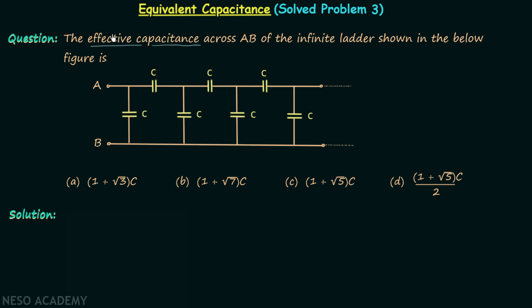Effective capacitance is the equivalent capacitance and we are required to calculate it across AB. So we need to calculate the equivalent capacitance across terminal A and terminal B and this is our ladder network.